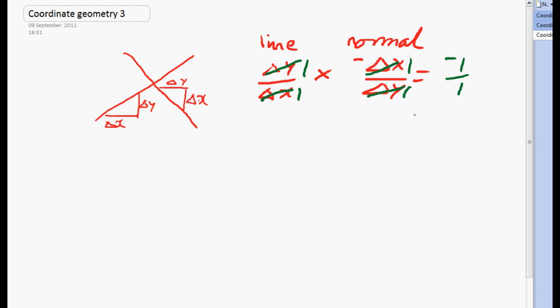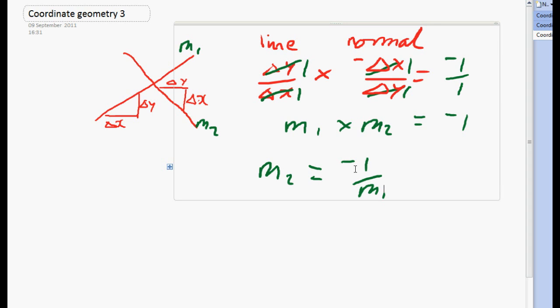1 times 1 is 1. So it gives you the fact that the gradient of the line, say the line is m1 and the normal is m2, then you're going to get m1 times m2 equals minus 1. So alternatively the gradient of the normal m2 equals minus 1 over the gradient of the original line. And we can use that to solve questions such as where you're asked to find the normals to any lines that you have.